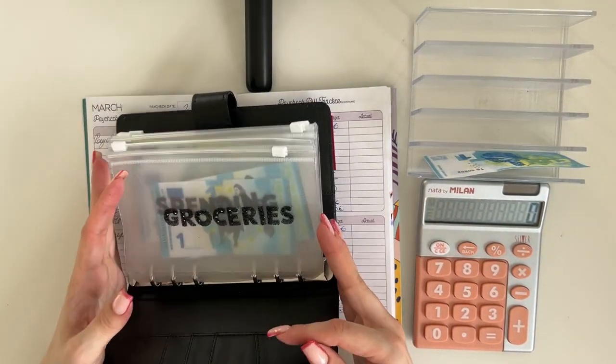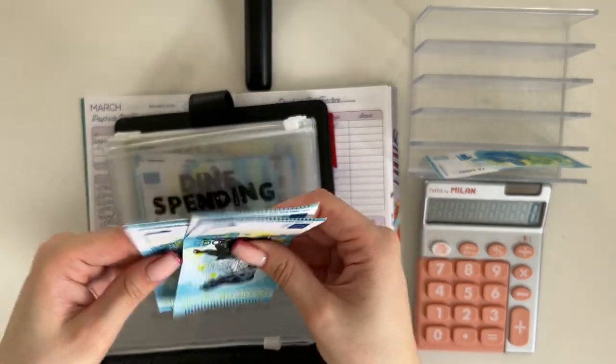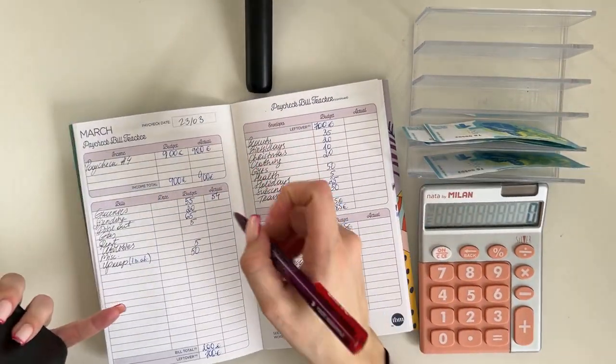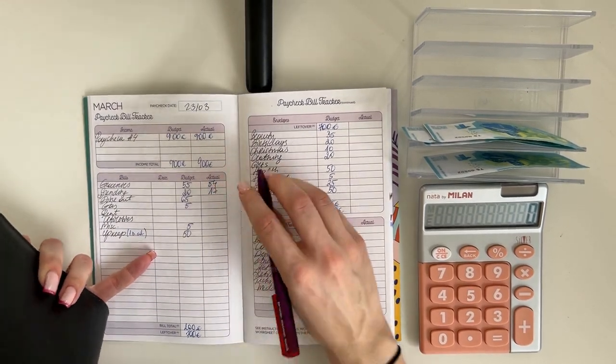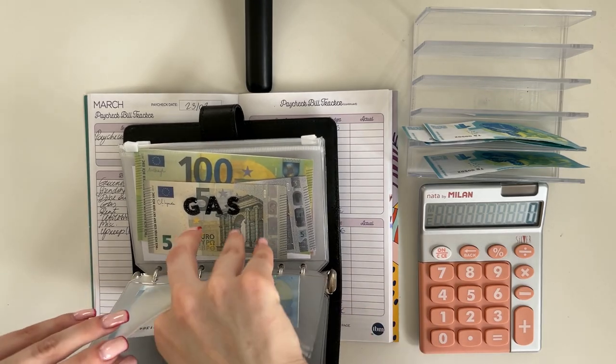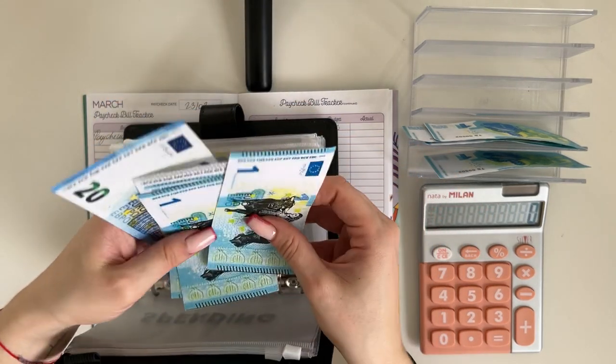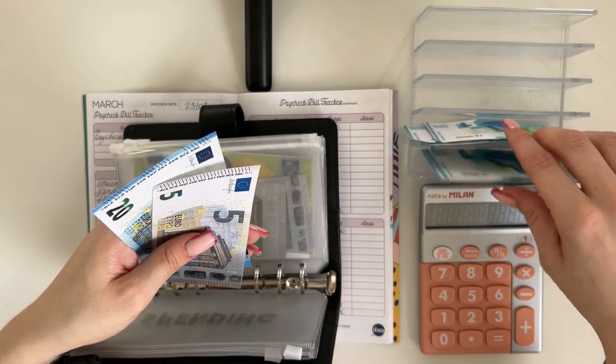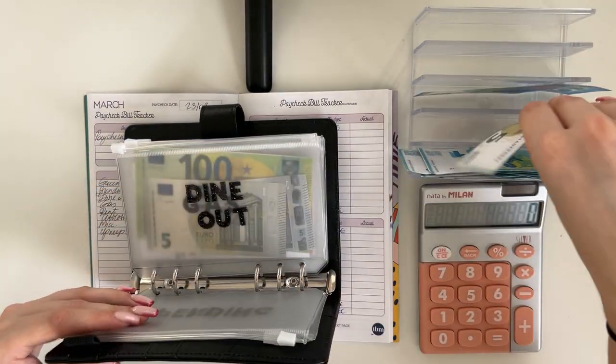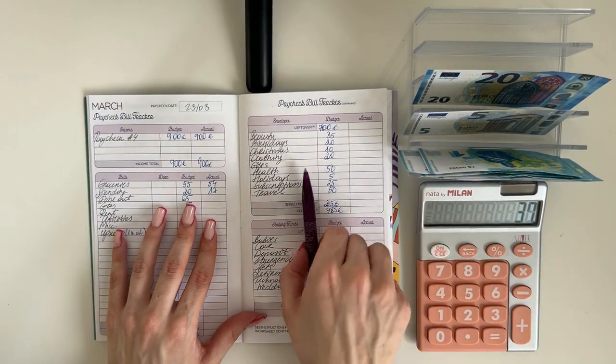Spending has a rollover of 1, 2, and 3, so we spent 17. And dine out has a rollover of 20, 25, 26, 27, and 28, so 28 euros. And let's see how much that was. 65 minus 28, we spent 37.